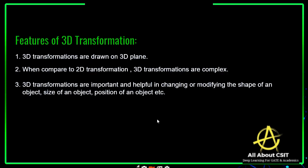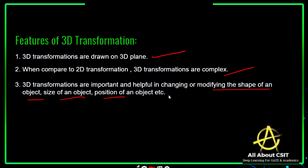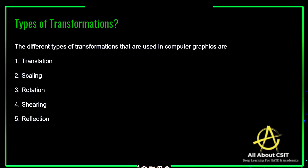Now let's look at the features of 3D transformation. 3D transformations are drawn on the 3D plane. Compared to 2D transformation, 3D transformations are more complex — a 2D object only requires X, Y calculations, but here we need X, Y, Z calculations. 3D transformations are important for changing or modifying the shape, size, and position of an object. The different types of transformations used in computer graphics are translation, scaling, rotation, shearing, and reflection, applicable to both 2D and 3D objects.